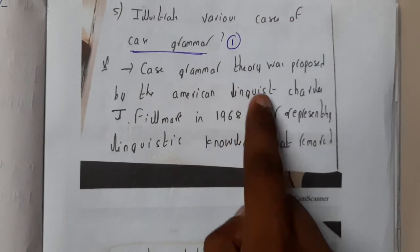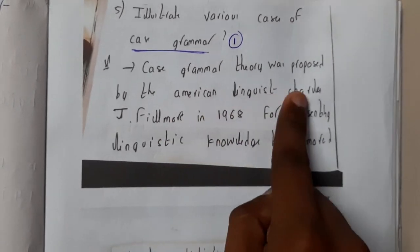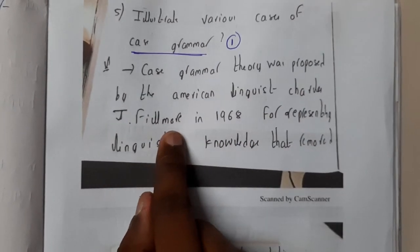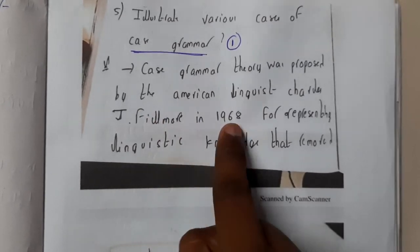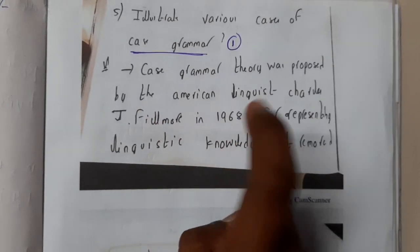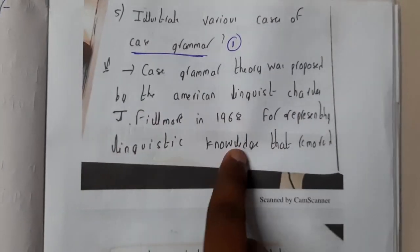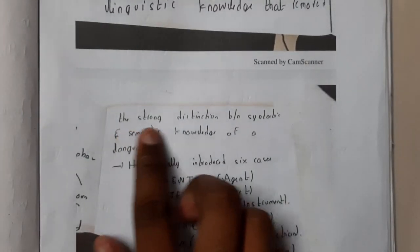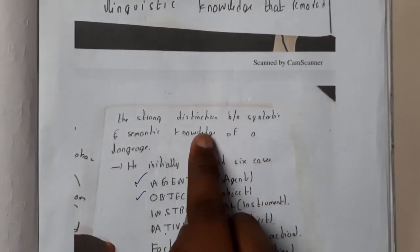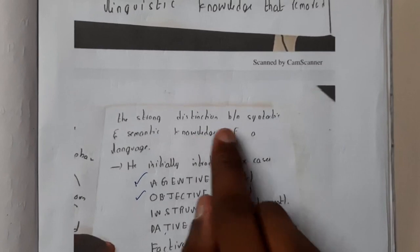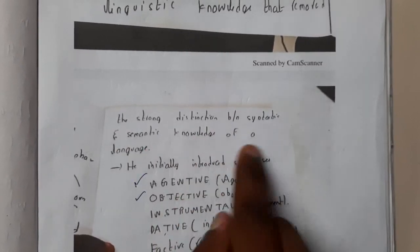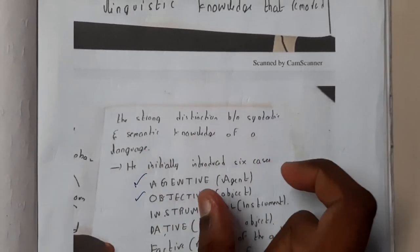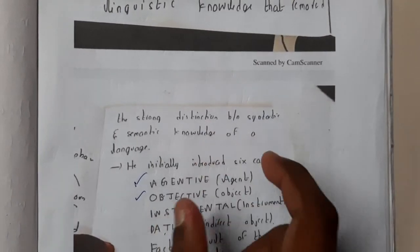Case grammar is a theory which was proposed by an American linguist called J. Fillmore in 1968, for representing linguistic knowledge. It shows the strong distinction between the syntactic and semantic knowledge of a language, and it is going to represent the differences between syntactic and semantic knowledge.